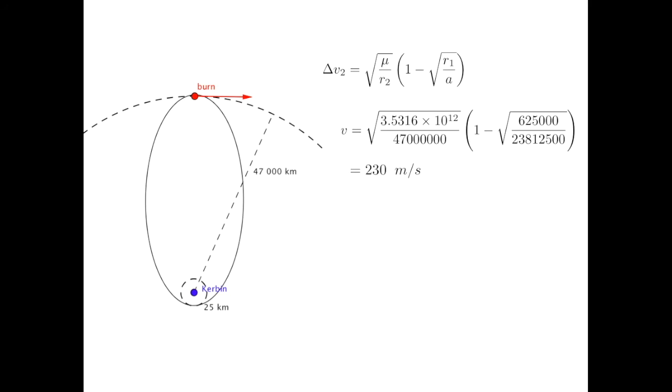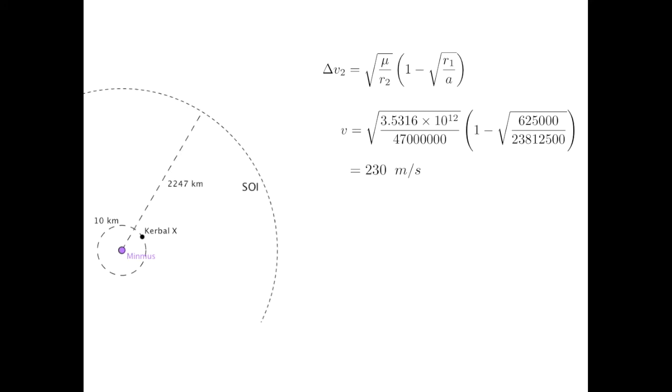Let's bring Minmus back into the equation. The Kerbal X is starting in a 10 kilometer orbit. Before we can begin falling towards Kerbin, we have to first leave Minmus' sphere of influence, or SOI. Within this sphere, the game calculates the force of gravity on the ship using Minmus. Once outside this SOI, we fall under Kerbin's gravitational influence. We have to do more than just leave the SOI, though. We have to exit the SOI with a velocity of 230 meters per second in a retrograde direction relative to Kerbin.